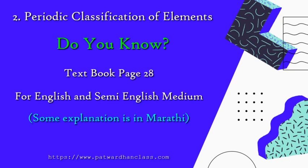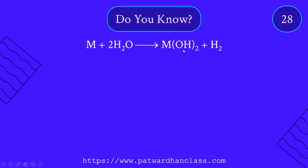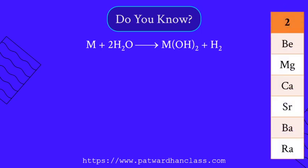We will go through the topic 'Do You Know' on page 28 of your textbook. It's a small topic. It is giving one reaction: M is the symbol of an element. M + 2H₂O gives M(OH)₂ + H₂, meaning the hydroxide is getting formed. These are the typical reactions of Group 2 elements, shown here.